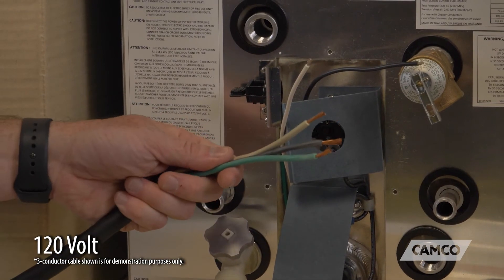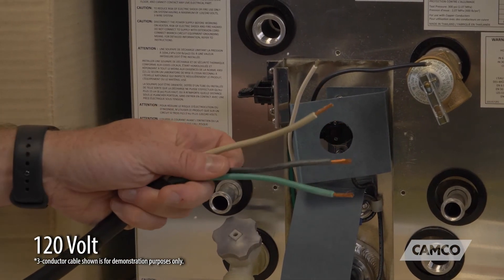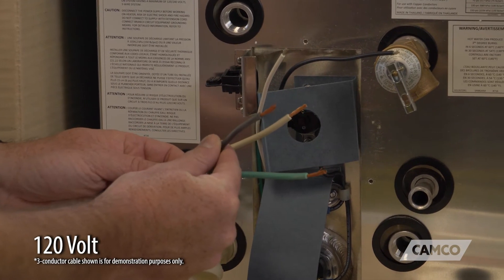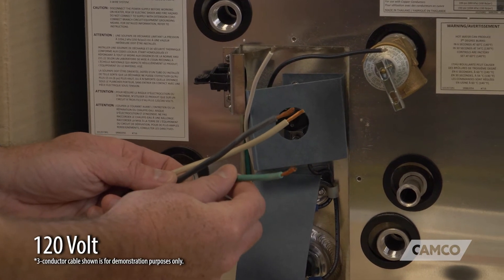So typically the wire that you're going to be connecting to for a 120 volt is going to have three wires. You're going to have your white, which is your neutral, your black, which is your hot wire, and your green, which is your ground.